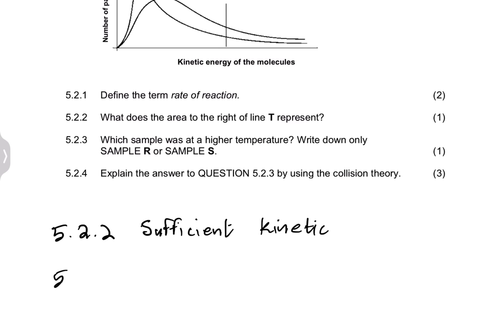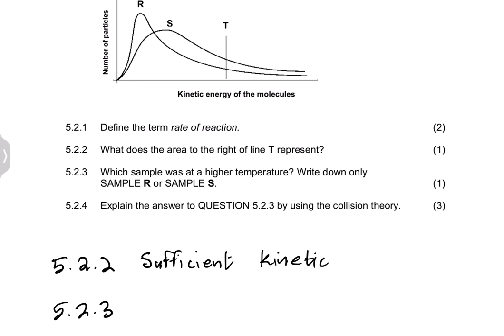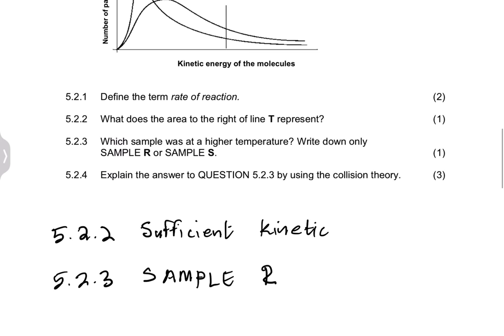They say which sample was at higher temperature — R or S? We said sample S is at higher temperature. The reason is the distribution becomes wider and the peak is lower. The average kinetic energy is much higher in sample S, which is why the graph is shifted more to the right.